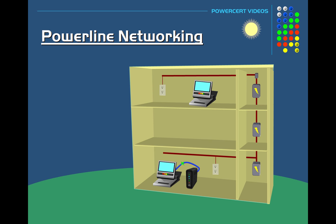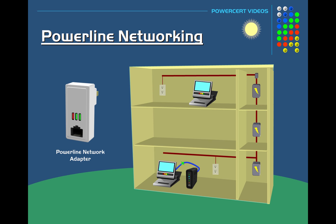We're going to need a couple of powerline adapters like these here. These powerline adapters plug directly into a power outlet and they have a built-in Ethernet port for an RJ45 connector. One adapter plugs into the power outlet next to the modem or router, and then you plug an Ethernet cable from the modem or router into the powerline adapter.